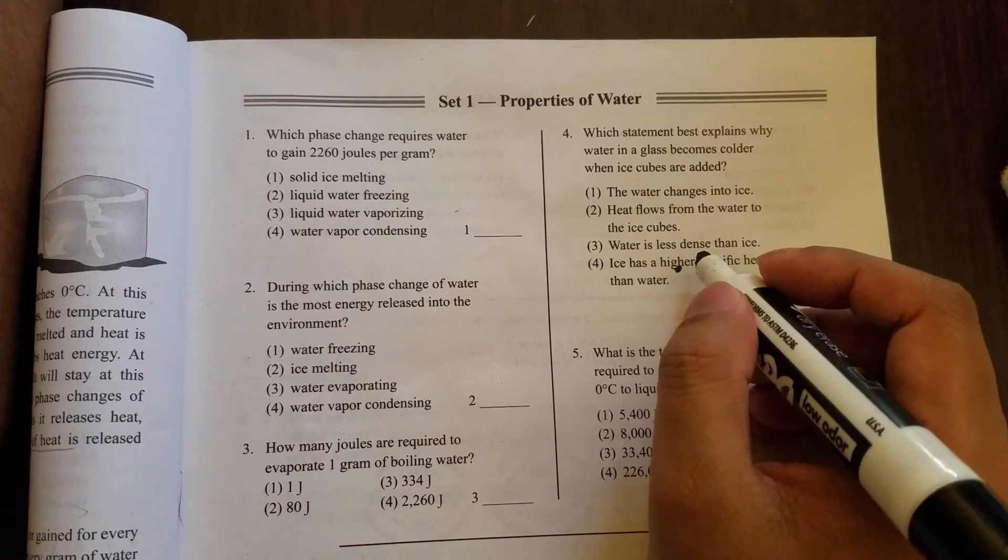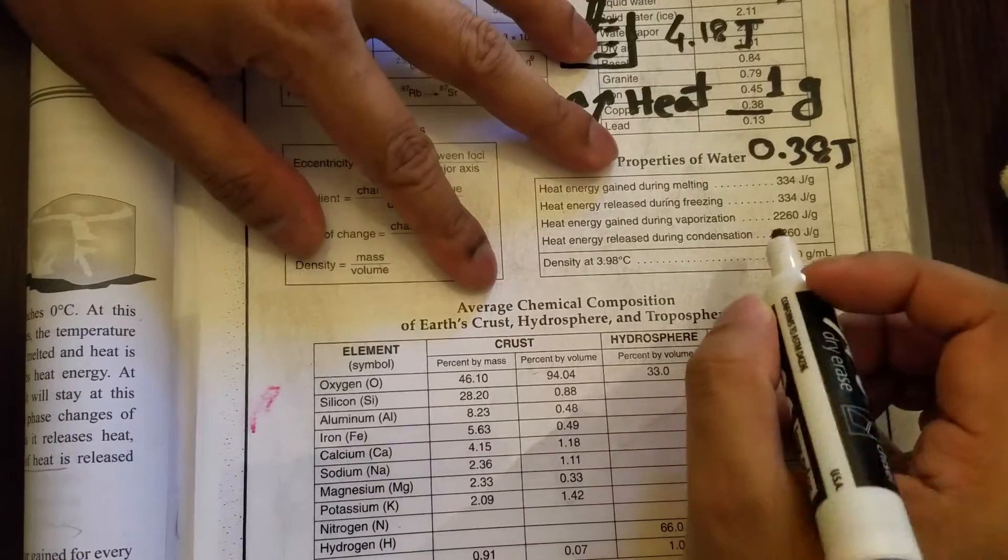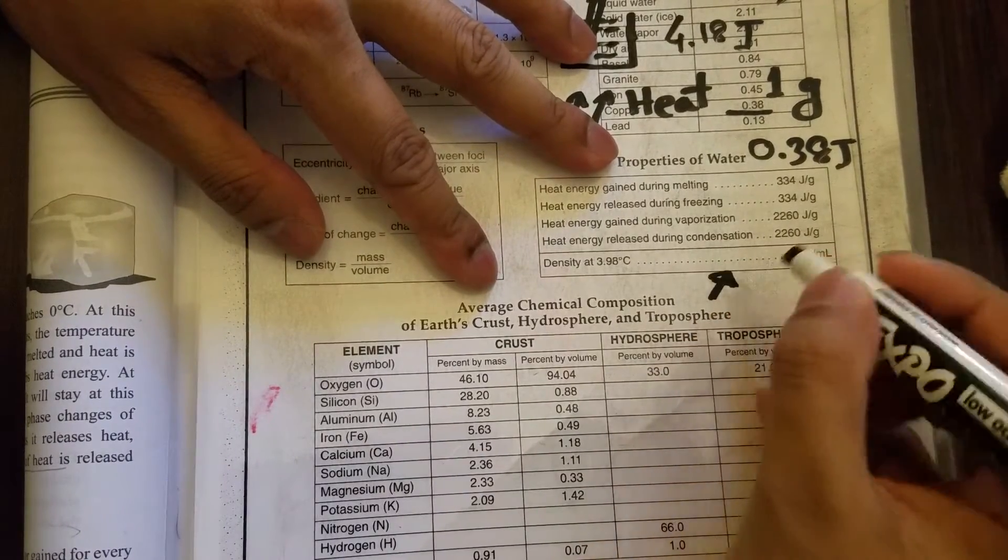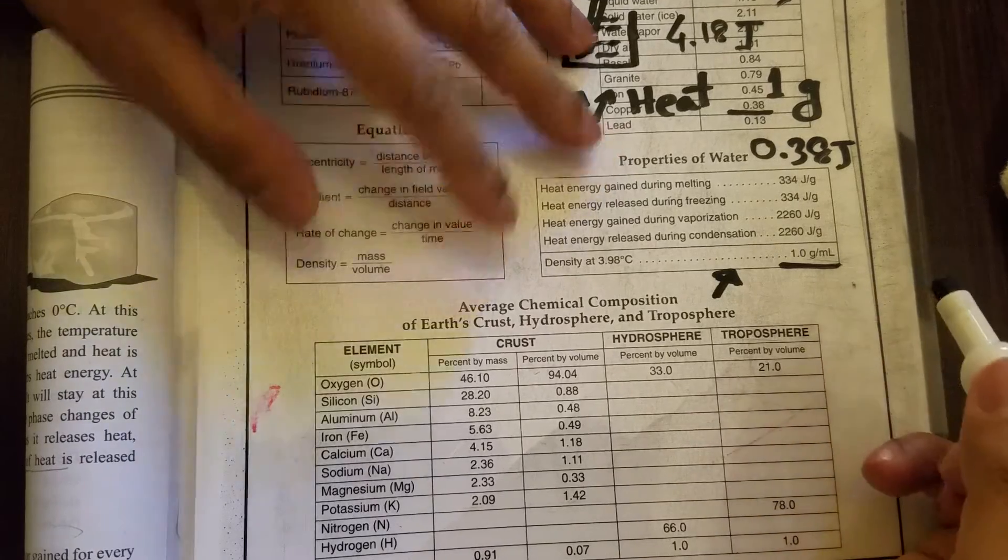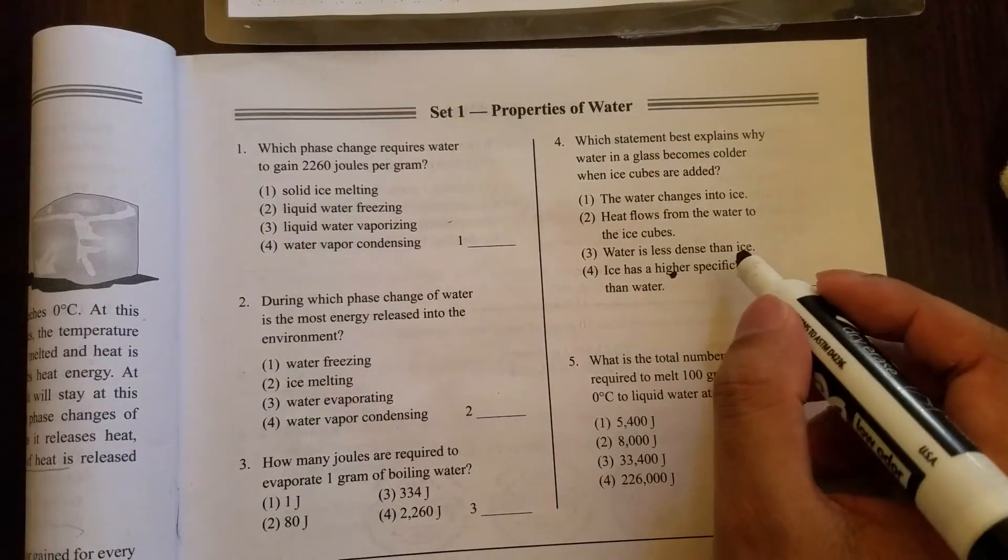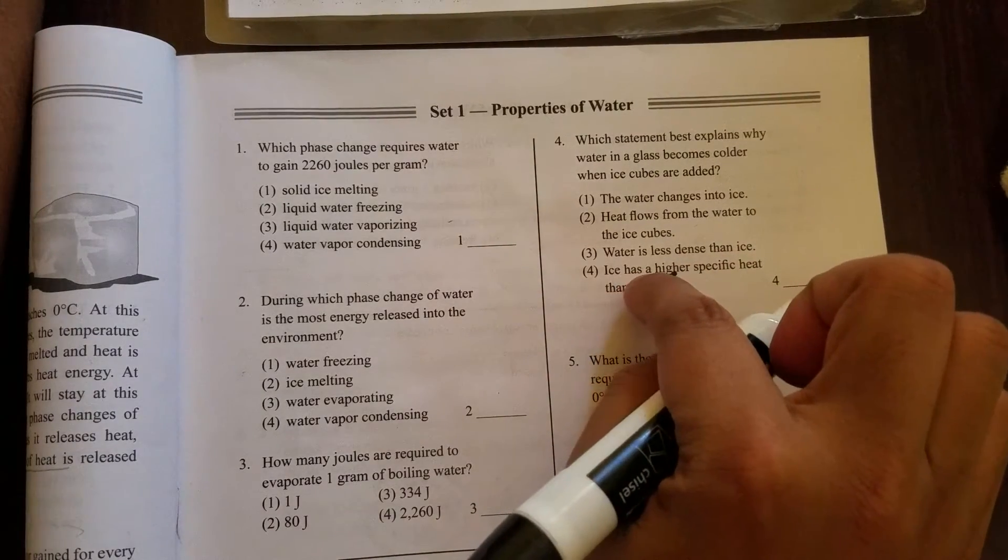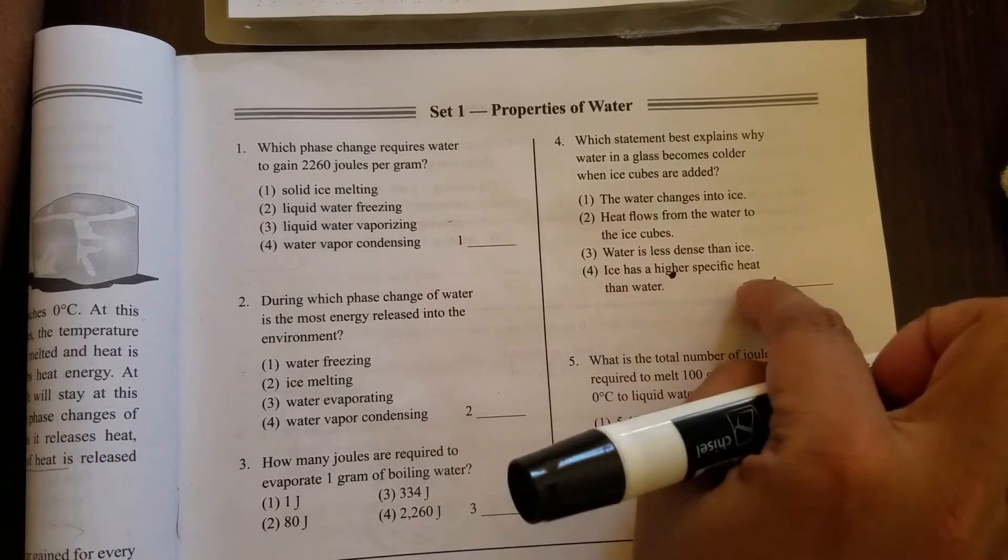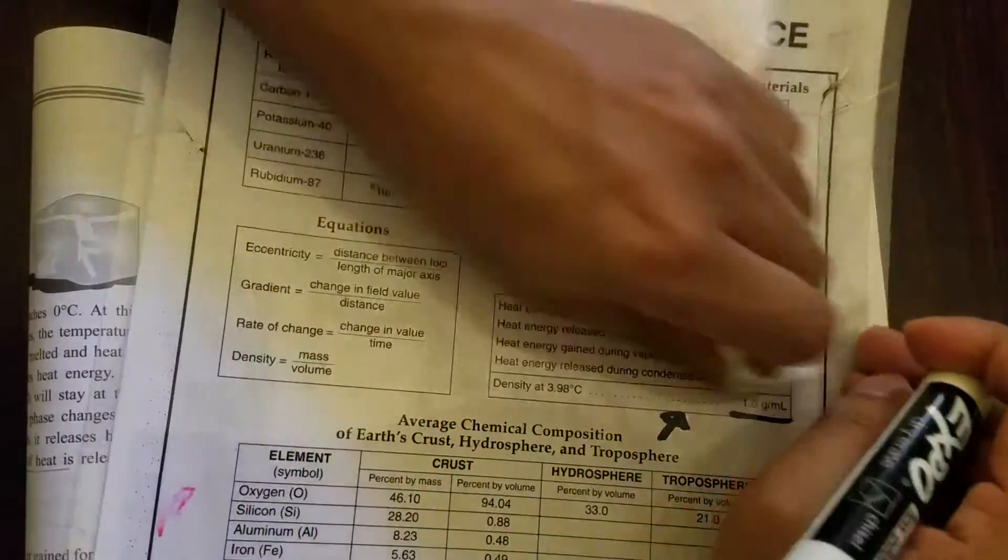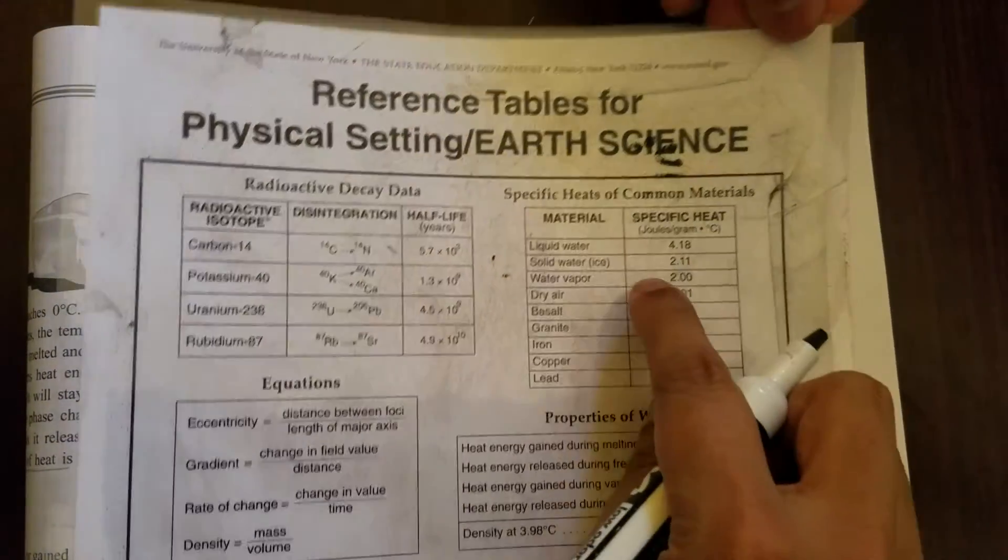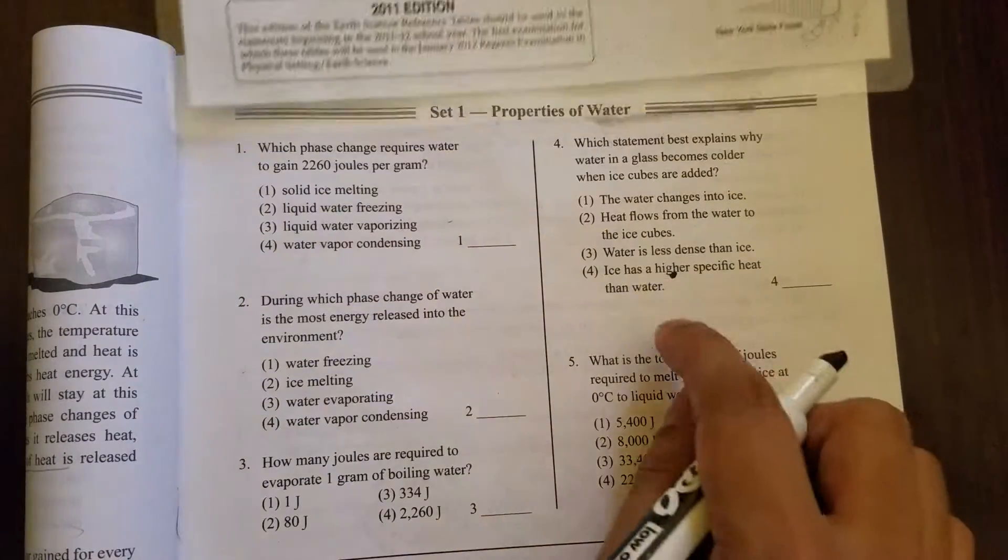Option three: water is less dense than ice. This is actually not right. Remember yesterday I told you that water has the highest density at 4 degrees Celsius, which is 1 gram per milliliter. So this statement is wrong. Option four: ice has a higher specific heat than water. We've already seen that solid water's specific heat is 2.11, liquid water is 4.18. So statement four is also wrong.